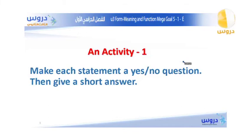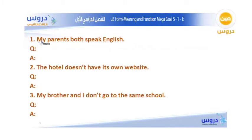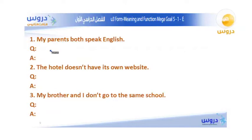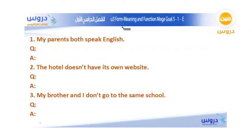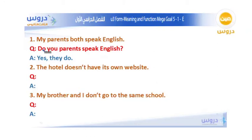Now we have an activity. We're going to take a statement, make a yes or no question, and give a short answer. The first statement is: My parents both speak English. Since parents is plural, we use do. The question is: Do your parents speak English? — Yes, they do.